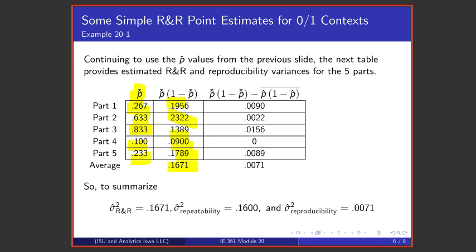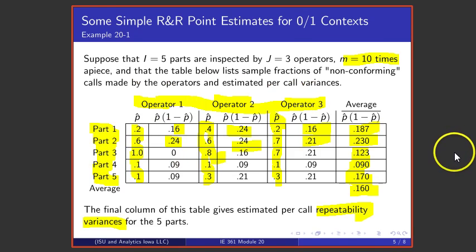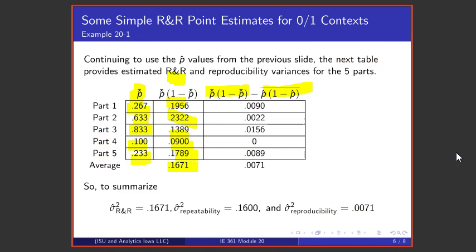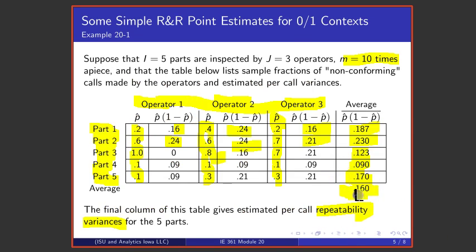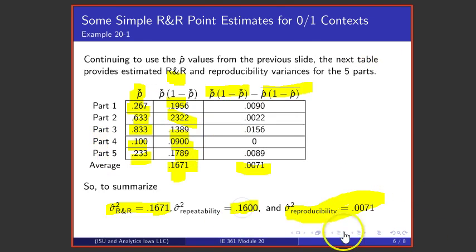And the difference between the values in this column, that is, this bit, and the repeatability variance that we just had in the previous last column, we get this number as an average at the bottom. We get a sigma squared reproducibility or sigma squared hat for reproducibility. The 1.671 is here, and the 1.671 is here, and the 1.60 here is on slide 7.